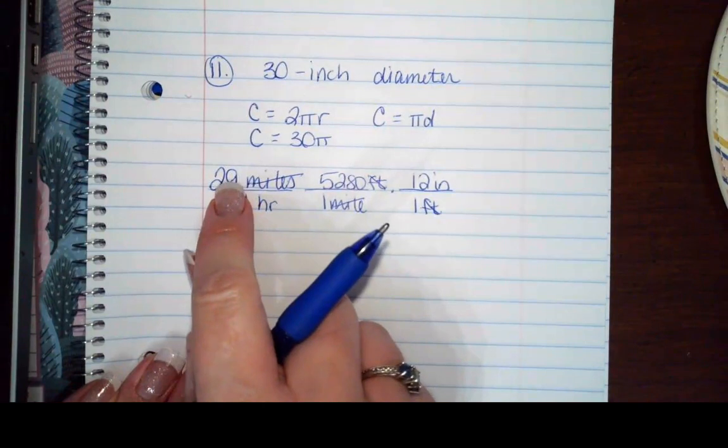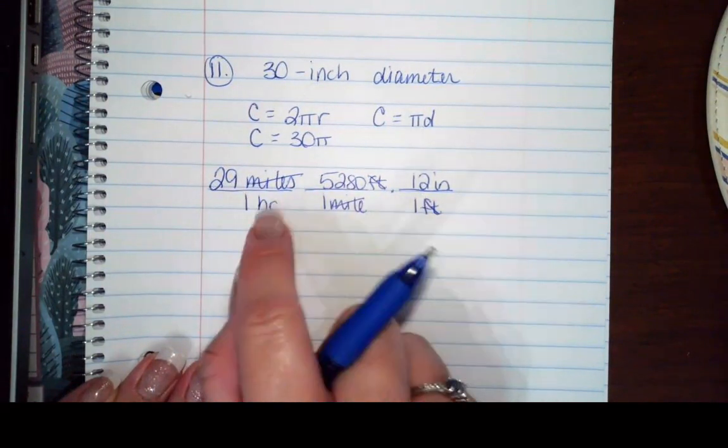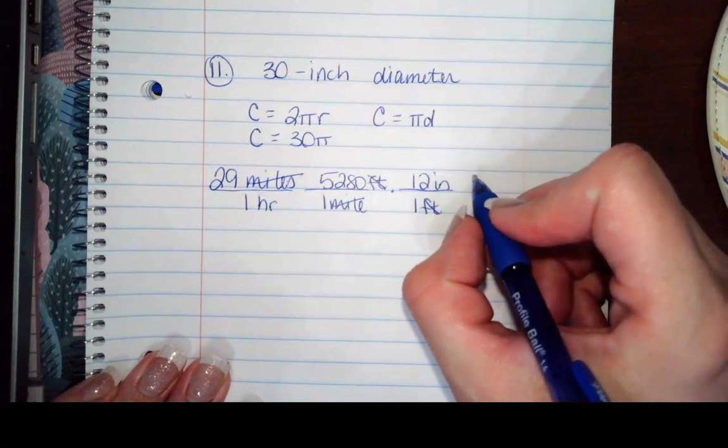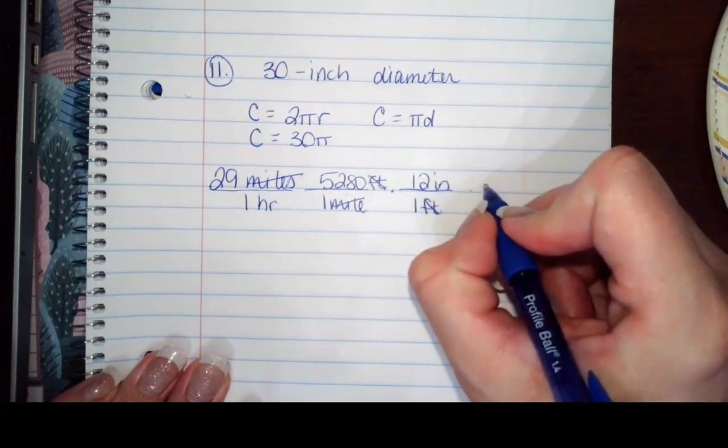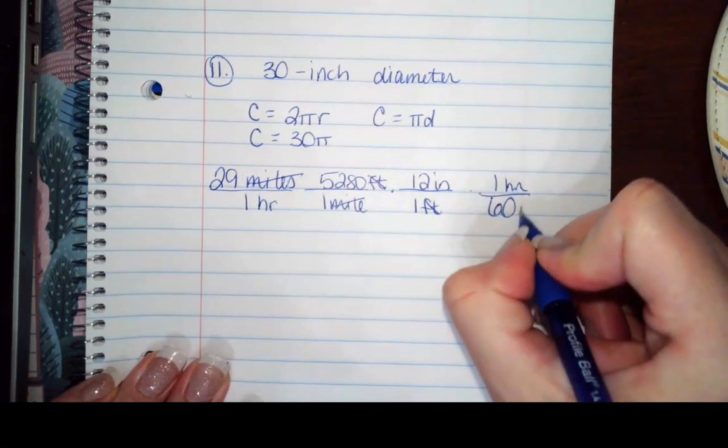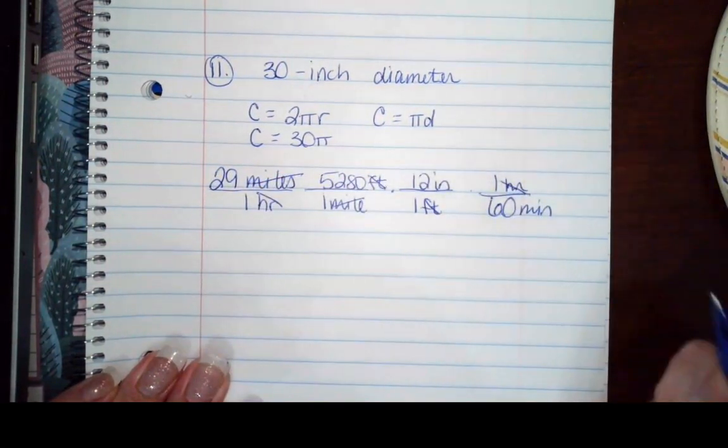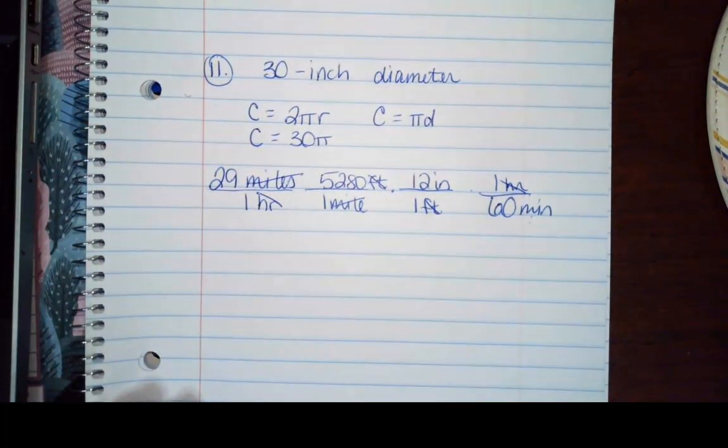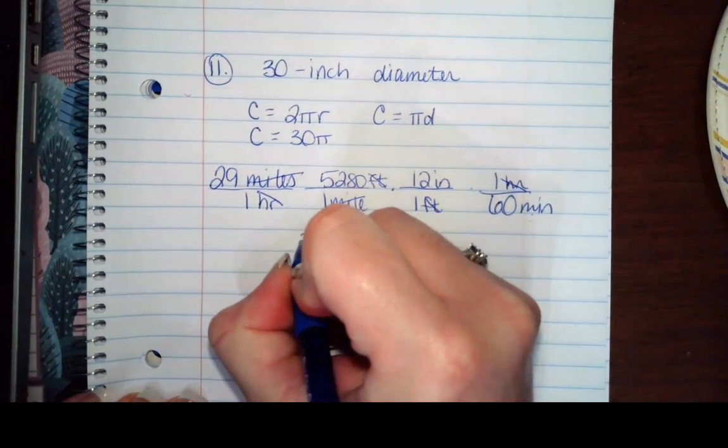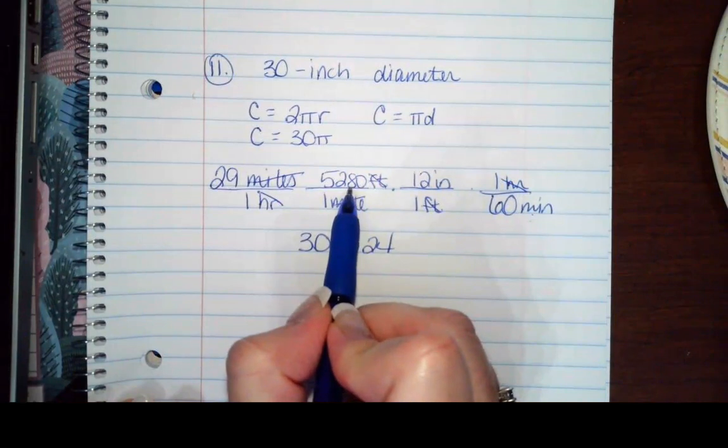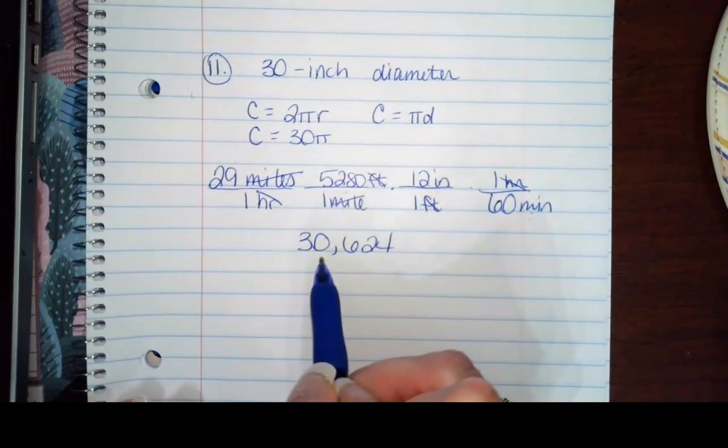So now I've got 29 times 5,280 times 12, but now I've got to take care of the hours. I've got one hour is the same thing as 60 minutes. So now my hours cancel out, and I've introduced inches per minute. When I multiply all that out, I get 30,624. So that's 29 times 5,280 times 12, divided by 60.